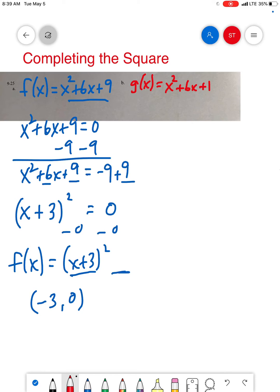All right, so again, start by setting the function equal to 0. Let's subtract 1 on both sides, x squared plus 6x. Let's just do plus something equals negative 1 plus something. Now that you're getting good, half of 6 is 3, 3 squared is 9.